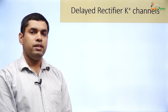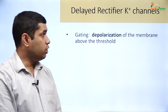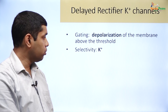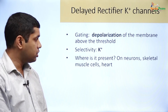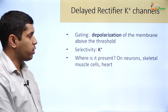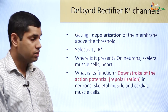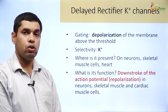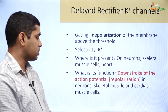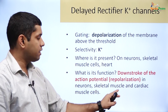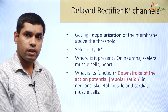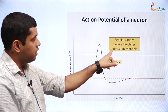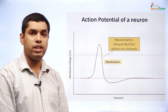The delayed rectifier potassium channel is gated by depolarization of the membrane above the threshold. Its selectivity is for potassium. It is present on neurons, skeletal muscles, and in the heart. Its function is important for the downstroke of the action potential or repolarization in neurons, skeletal muscles, and cardiac muscle cells. So repolarization of the action potential is due to the opening of delayed rectifier potassium channels, which are outward rectifiers preferentially permitting an outward current.